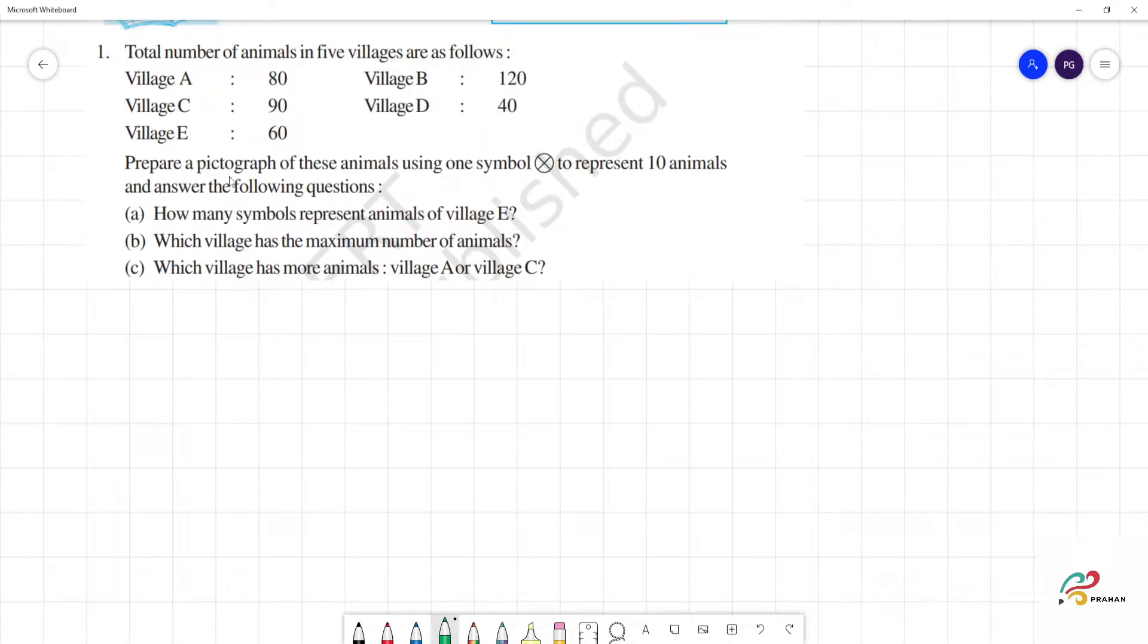Now, prepare a pictograph of these animals using one symbol. This symbol represents 10 animals. One picture represents 10 animals.